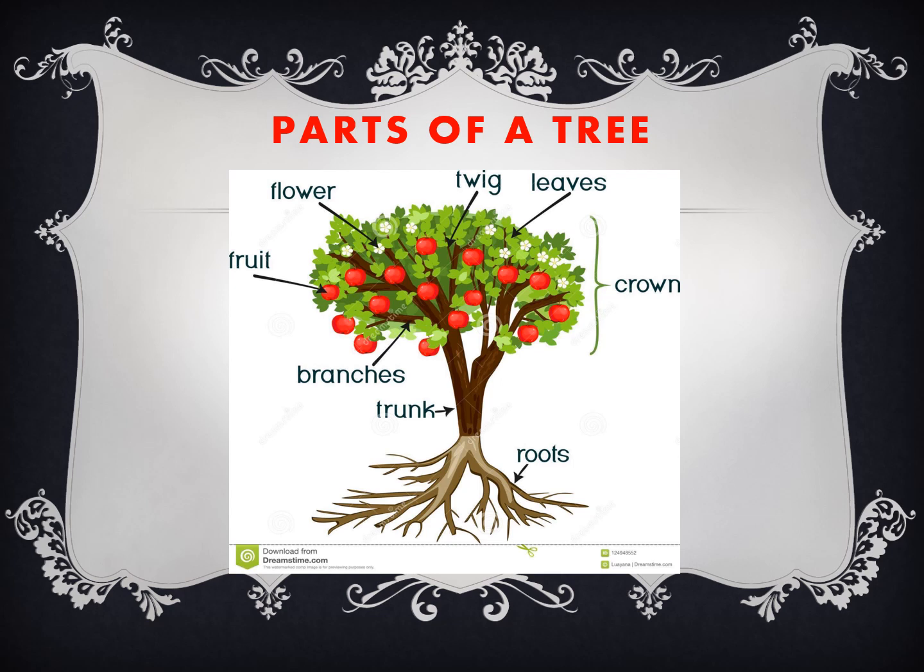Then we have branches, which support the leaves, fruits, and flowers. We also have very small, weak branches called twigs. The leaves are basically the kitchen where food is prepared for the tree. And then we have flowers and fruits.